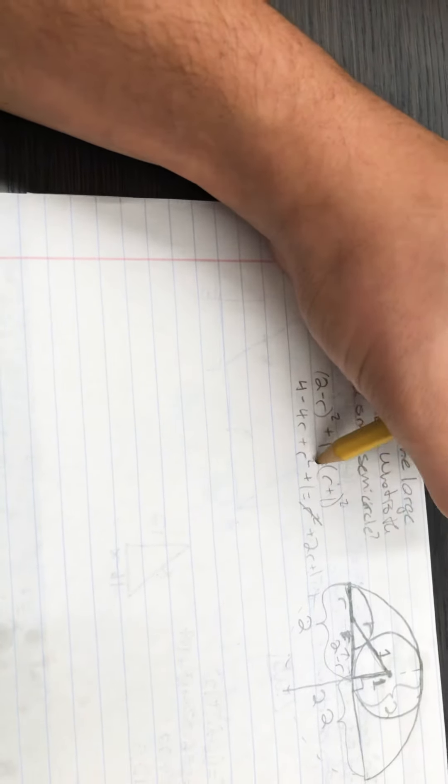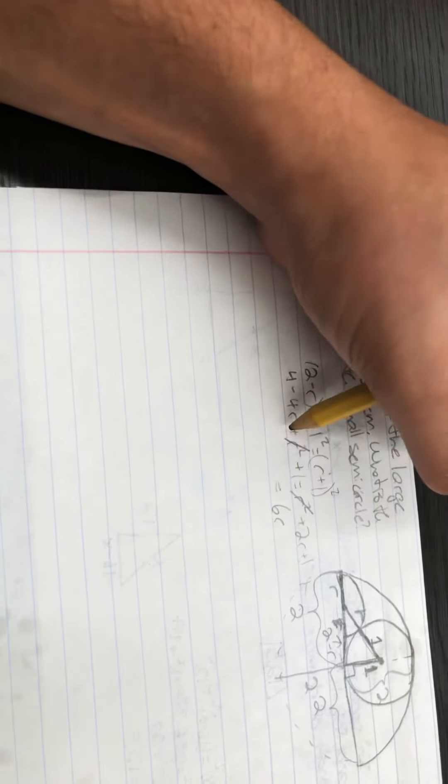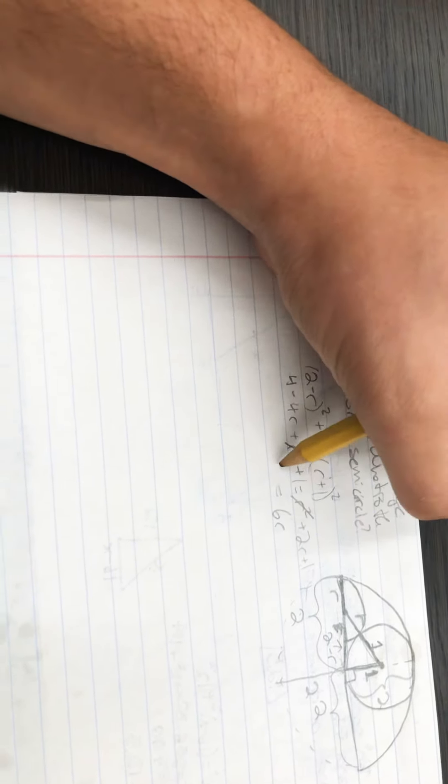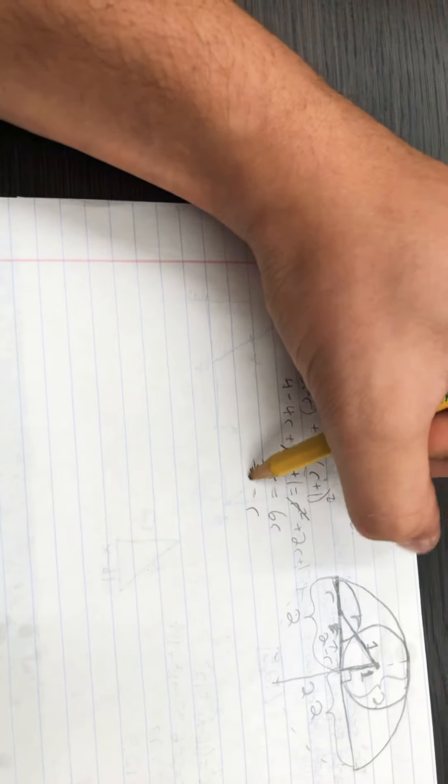These two cancel out. I could say 6R equals, subtract 1 over here, 4 plus 1 minus 1 is 4. So the radius equals 2/3.